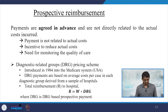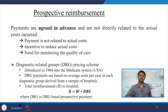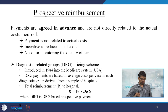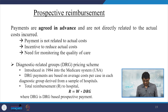Prospective reimbursement requires diagnostic-related groups (DRG) pricing schemes — for example, the DRG pricing scheme introduced in 1984 into the Medicare system in the USA. DRG payments are based on average cost per case in each diagnostic group, derived from a sample of hospitals. Total reimbursement to the hospital is R equal to W times DRG.